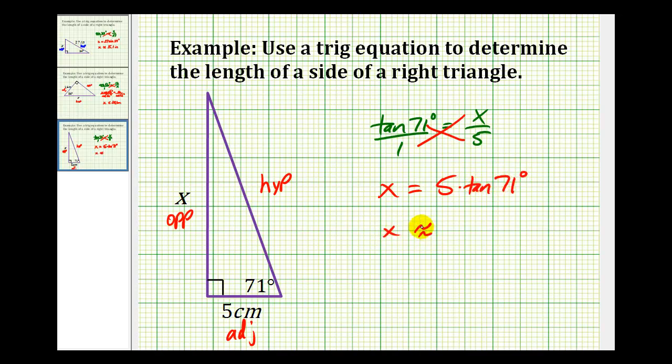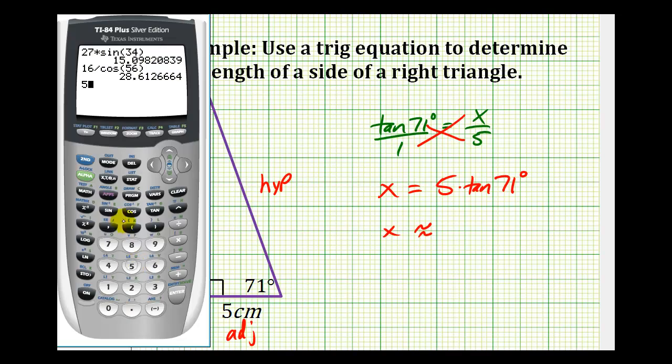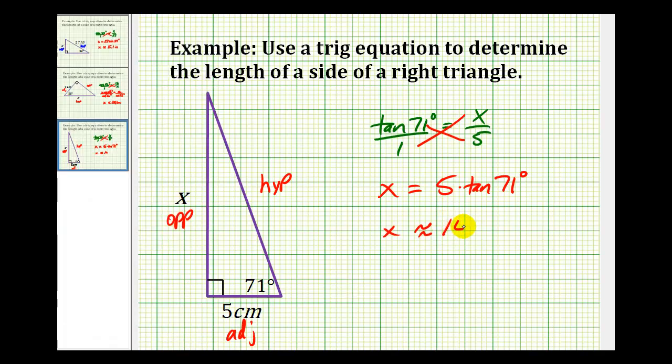Now we'll go to the calculator. 5 times tangent 71 degrees. So x is approximately 14.5 centimeters.